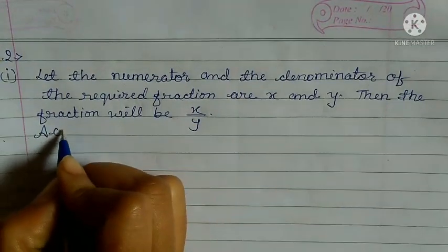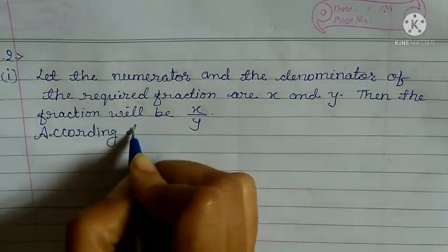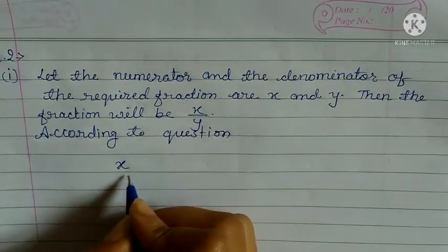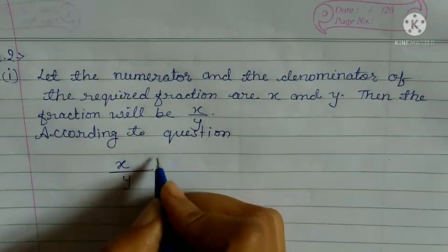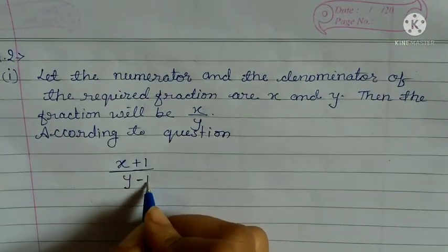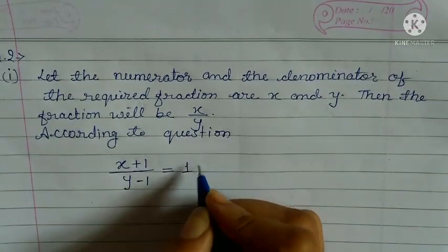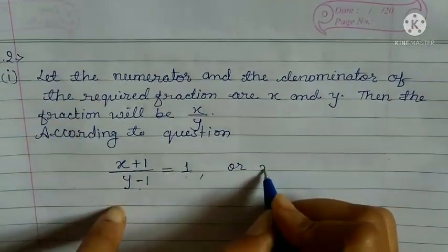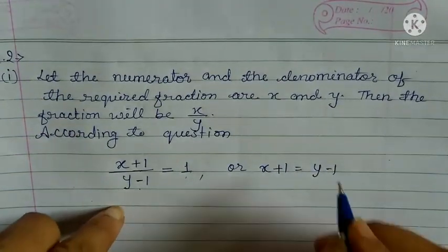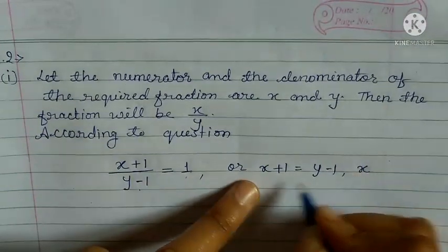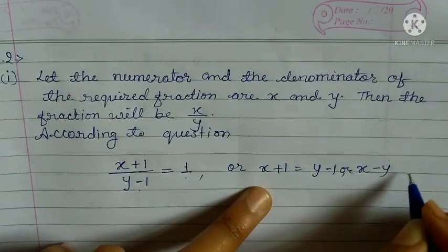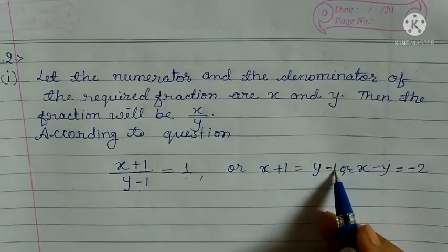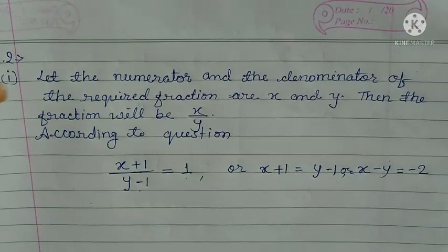Now, according to the question, the fraction x upon y is given. If we add 1 to the numerator and subtract 1 from the denominator, the fraction reduces to 1. So this gives us: x + 1 = y − 1, which simplifies to x − y = −2. This is equation 1.